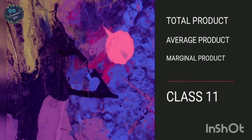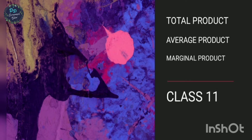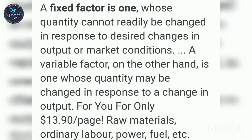Hi everyone, welcome to DD Economics Tutor. In this video we are going to learn about the Total Product, Marginal Product and Average Product — TP, AP, MP — their definitions and the use of the terms fixed factors and variable factors.